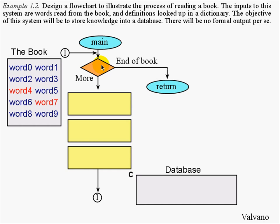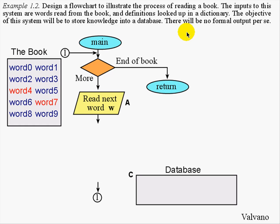The while loop has two parts. The first is the ending condition, shown here with this orange decision, such that if we reach the end of the book, we will stop the while loop. But if we have more words in the book, we will enter the body of the while loop — in this case a multi-step sequence used to transfer the knowledge from the book into the database. The circles with the one are connectors, such that this overall loop will traverse over and over again each time we read one word from the book. The first step in the body of this while loop will be to read one word from the book. This is an input function, shown as the trapezoid. Once we read the word from the book, our goal is to remember that information into the database.